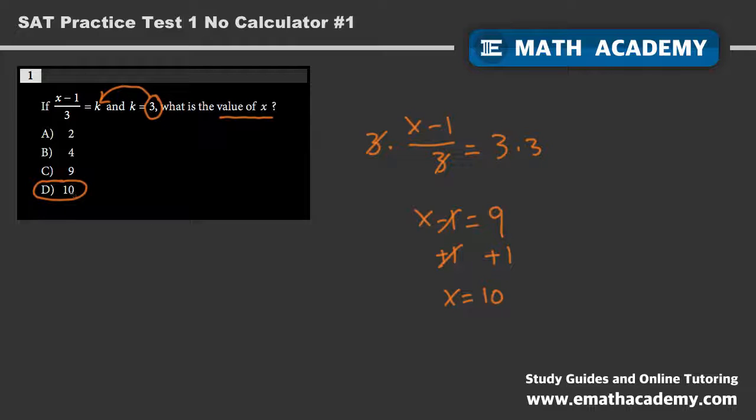We can always go back to see if this works as well, so let's plug in 10 here. 10 minus 1, that's 9, divided by 3. 9 divided by 3 is 3. They said k is 3. Yes, that does work out.